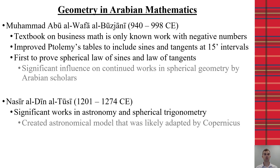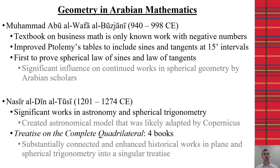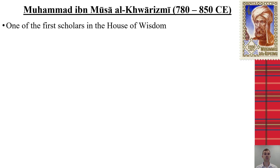Another important Arabian mathematician in geometry was Nasser al-Din al-Tusi, who had significant works in astronomy and spherical trigonometry. His work as an astronomer likely influenced how Copernicus created his heliocentric model of the solar system. He also created a work called the Treatise of the Complete Quadrilateral — four books together — which combined and enhanced the known works of both plane and spherical trigonometry into a singular treatise, unifying hundreds or even thousands of years of accumulated knowledge.